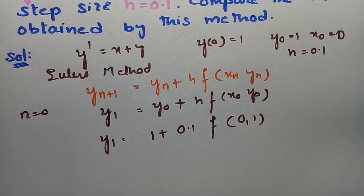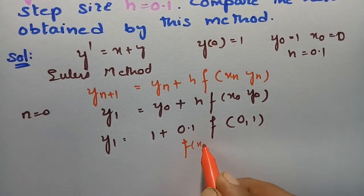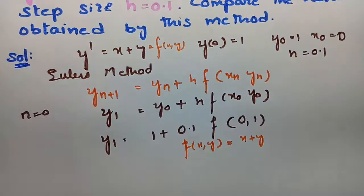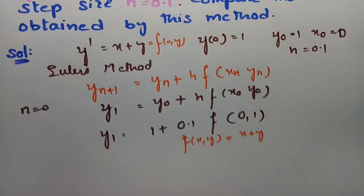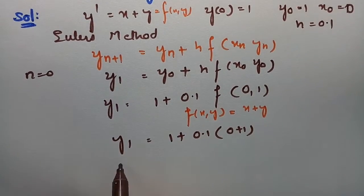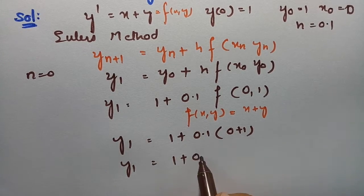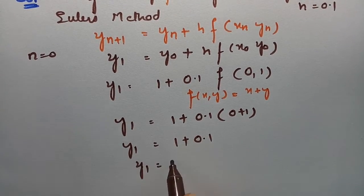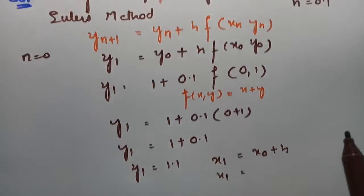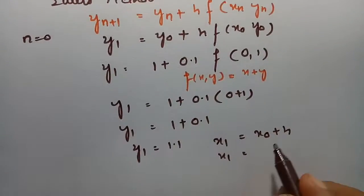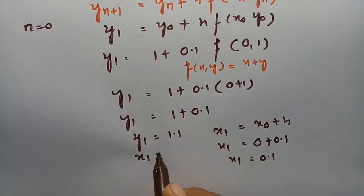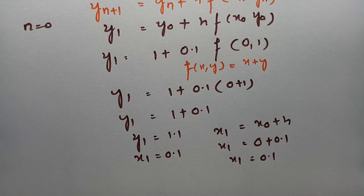Our function f(x, y) = x + y. So we add the two values: y_1 = 1 + 0.1 × (0 + 1) = 1 + 0.1 = 1.1. And x_1 = x_0 + h = 0 + 0.1 = 0.1. So x_1 = 0.1 and y_1 = 1.1.